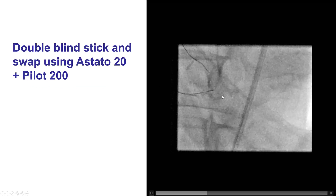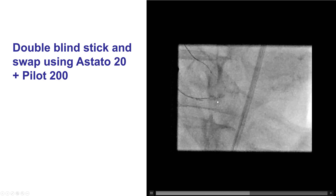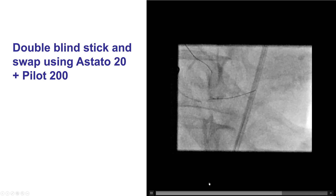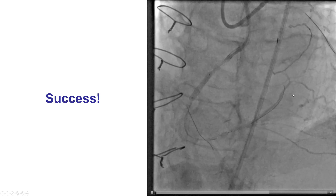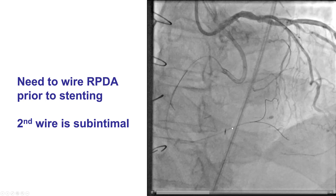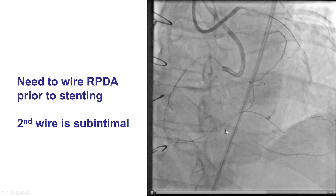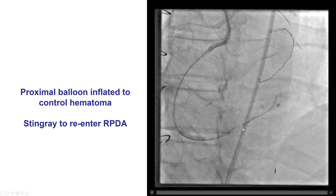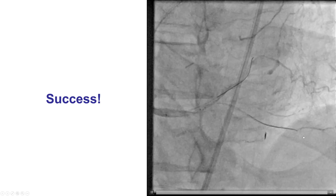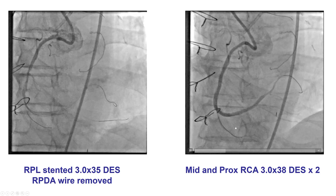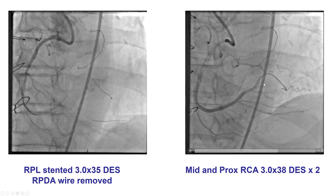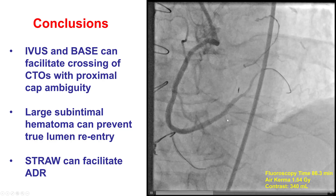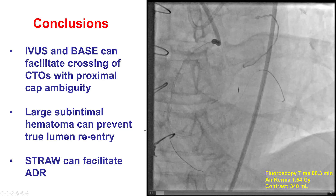An Astato 20 stiff 20-gram guide wire was advanced through the side port of the stingray balloon and seemed to advance along the course of the vessel. Contralateral injection demonstrated that the wire seemed to be going in the right direction. We did not want to affect the patency of the PDA, so we made another attempt to wire the PDA using the stingray balloon at the origin of the PDA, and we were then able to successfully wire into the PDA as well, which ended up being a fairly small branch. We then placed stents in the right coronary artery from distal to proximal, restoring good antegrade TIMI flow.